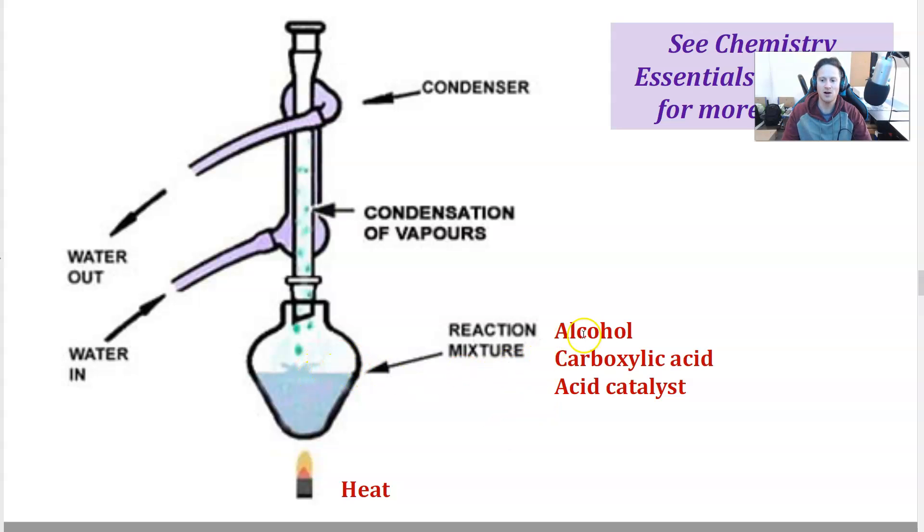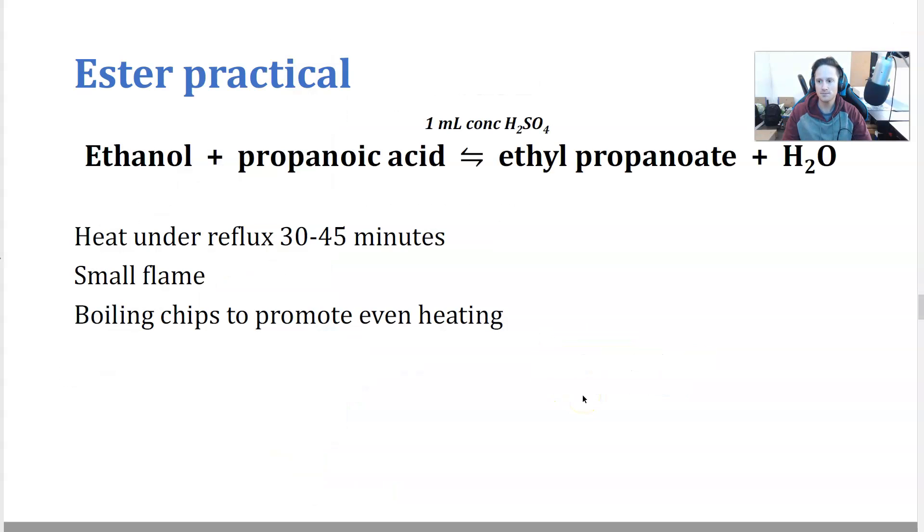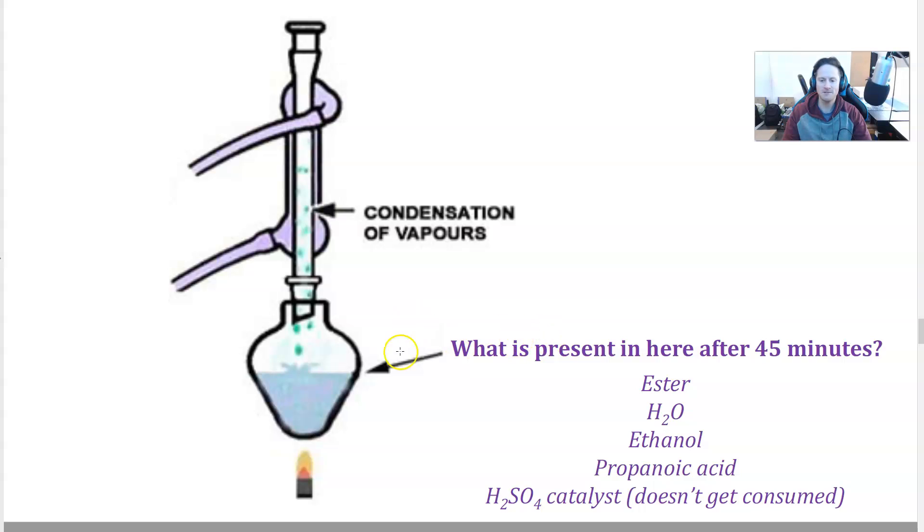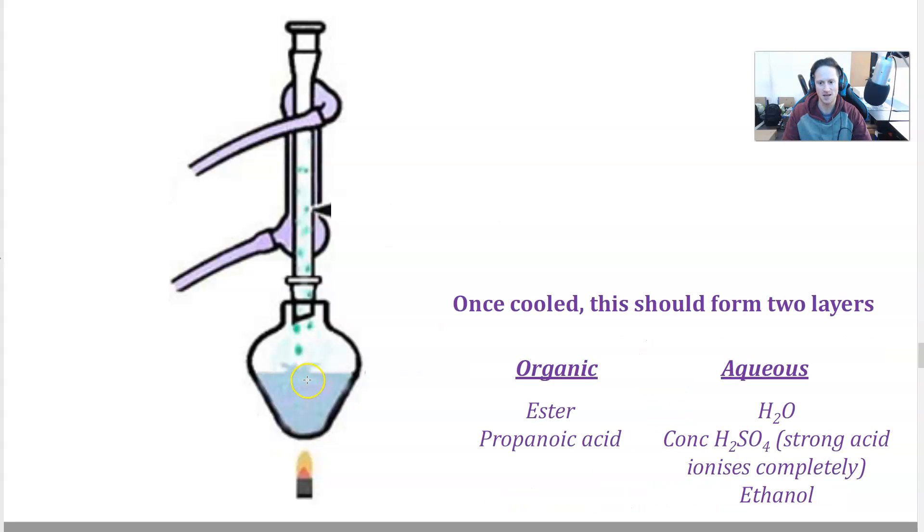So the reaction mixture is your alcohol, your carboxylic acid, and your strong acid catalyst. An example practical for an ester, ethanol, propanoic acid makes ethyl propanoate and water. So after 45 minutes of reflux, you want about half an hour, 45 minutes. What's present in here? We've got our products, which is our ester and water. We've got our reactants, which is ethanol and propanoic acid, because remember it's an equilibrium reaction, so you're not going to get 100% product, and our catalyst, because that doesn't get consumed in the reaction. So there's five things in this flask at the moment.